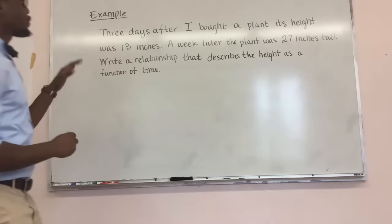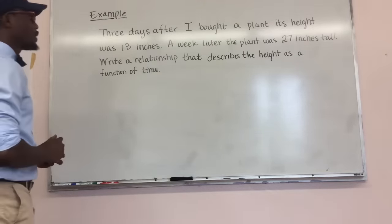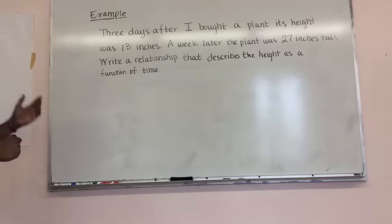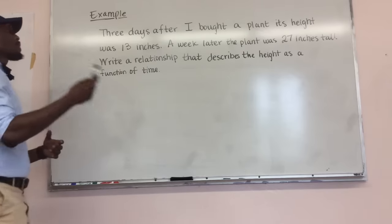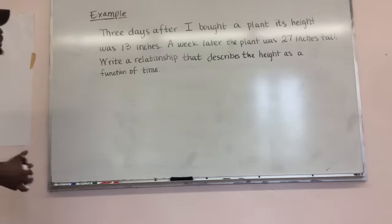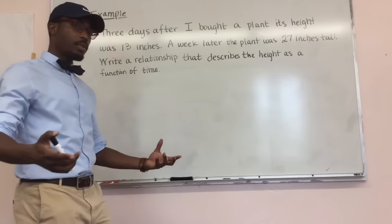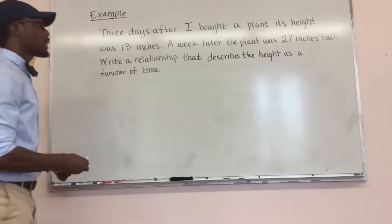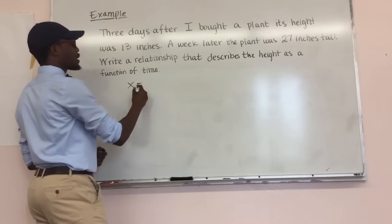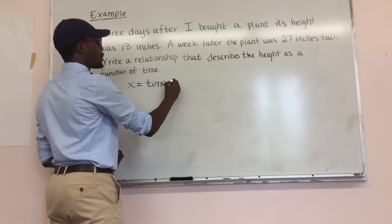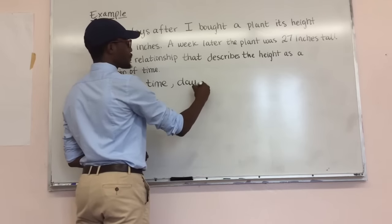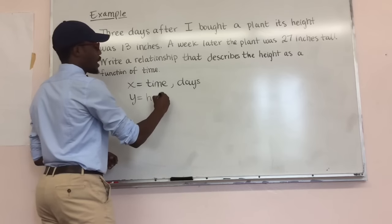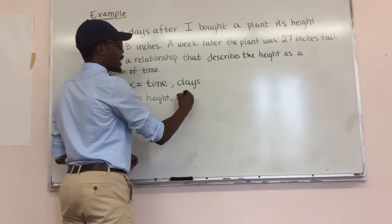The problem says: three days after I bought a plant, its height was 13 inches. A week later, the plant was 27 inches tall. Write a relationship that describes the height as a function of time — in other words, create an equation. We can still use X's and Y's. We'll say X is our time, measured in days, and Y is our height, measured in inches.